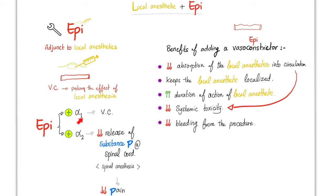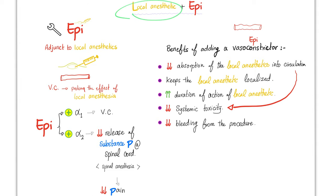Epinephrine is an alpha-1 and alpha-2 agonist. Alpha-1 causes vasoconstriction. Alpha-2 is anti-sympathetic — it decreases the release of substance P at the spinal cord, which decreases pain. The anesthesiologist says: no pain, no pain.